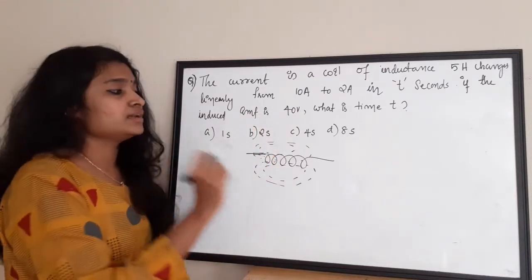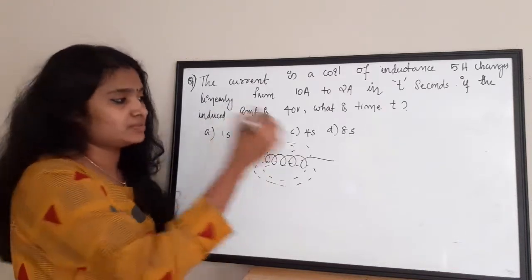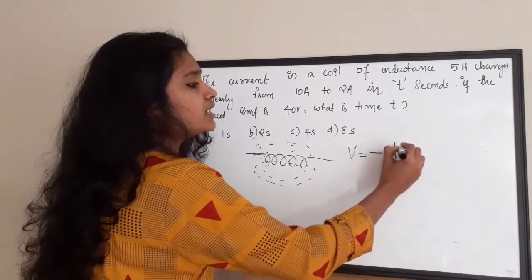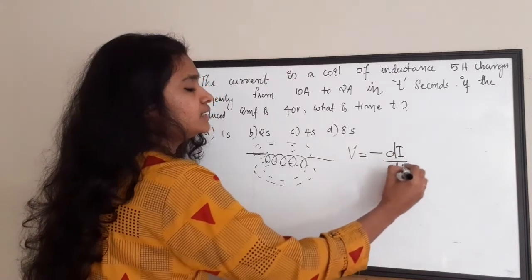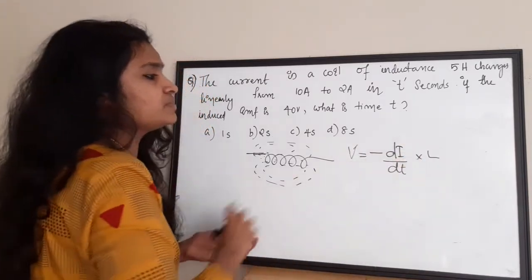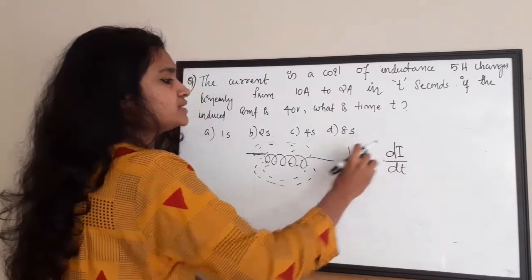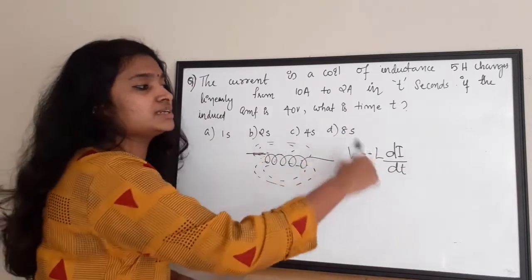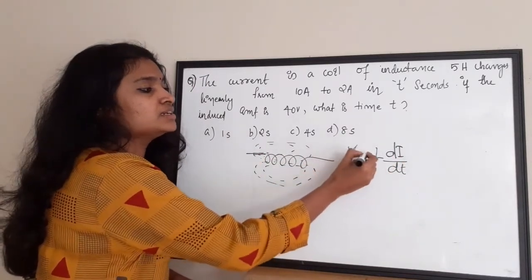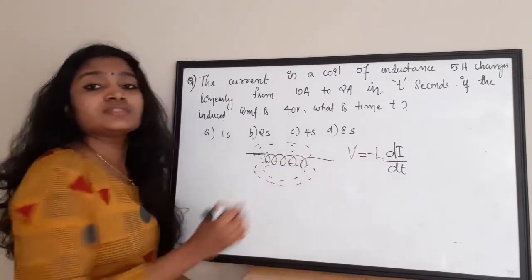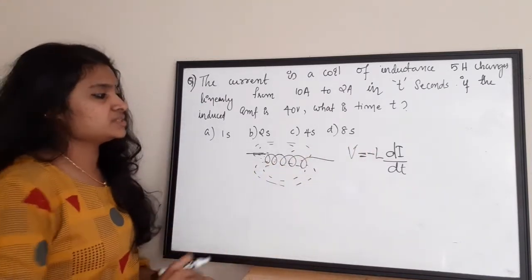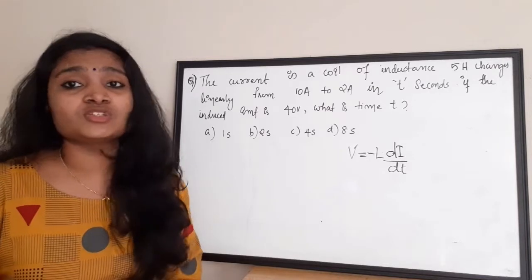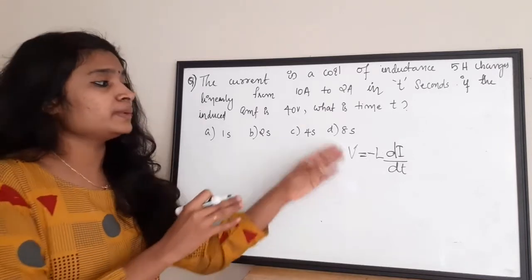The induced EMF is given as 40 volt, and this EMF is actually against the time-varying current. The equation for this time-varying EMF is given by V = -L × dI/dT. This is the EMF generated against the change in current dI/dT — it is opposing, and that is why it is given a negative sign. I hope the concept of inductance and the time-varying nature is clear now.